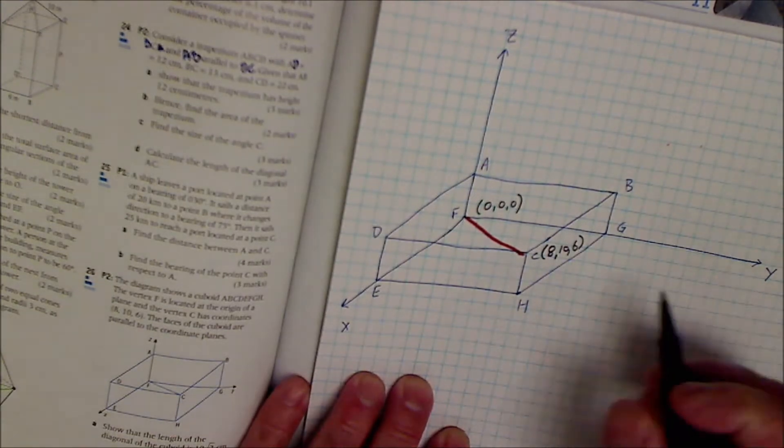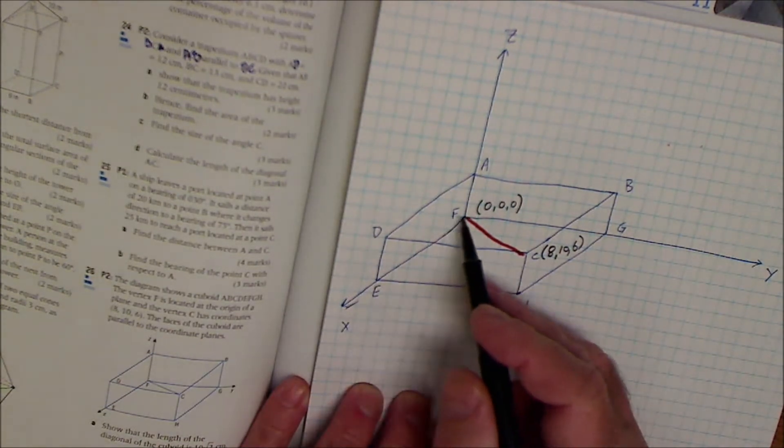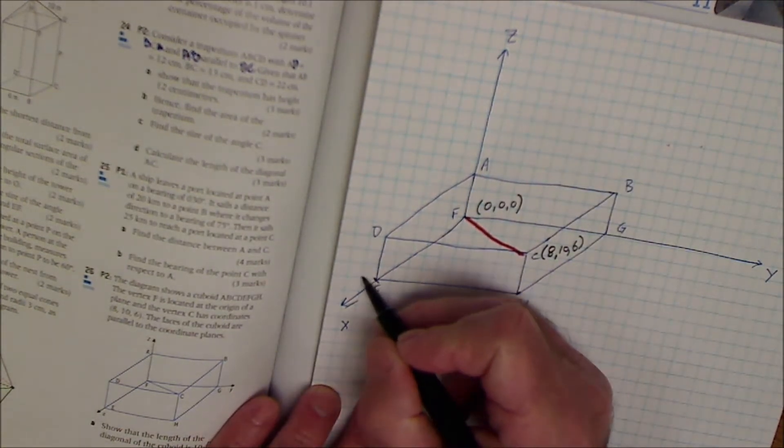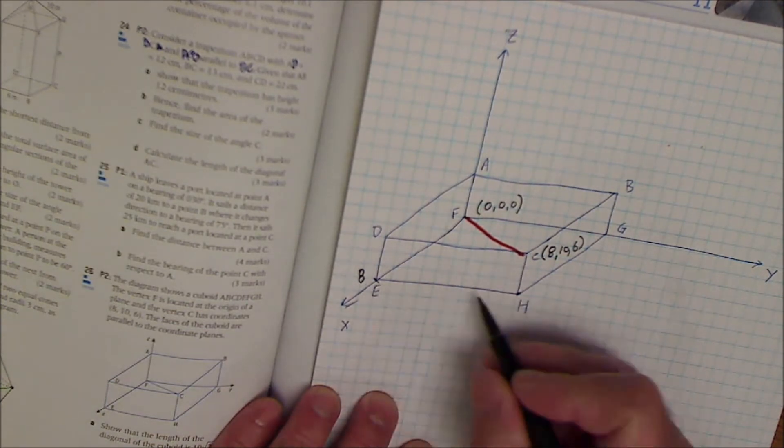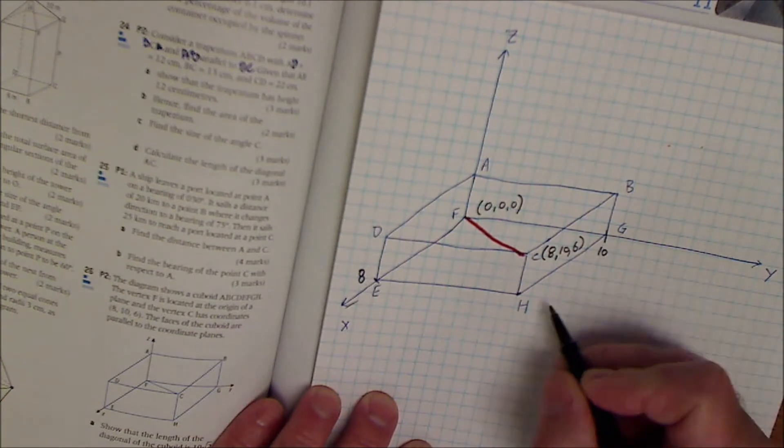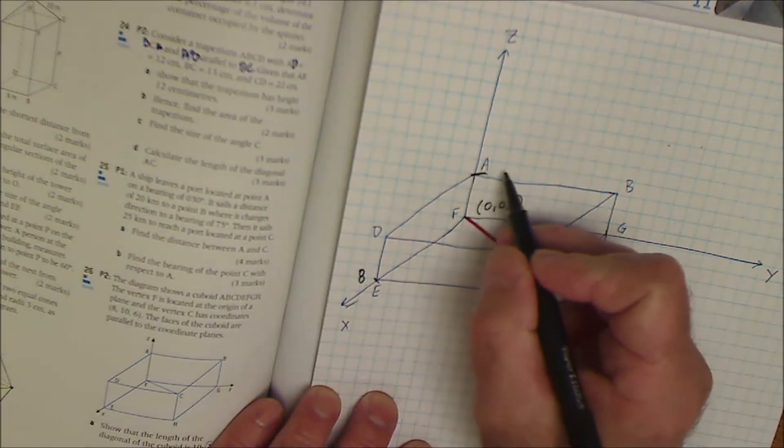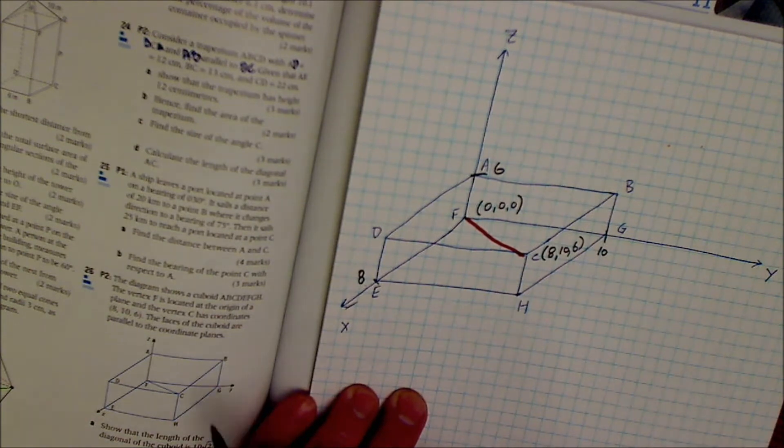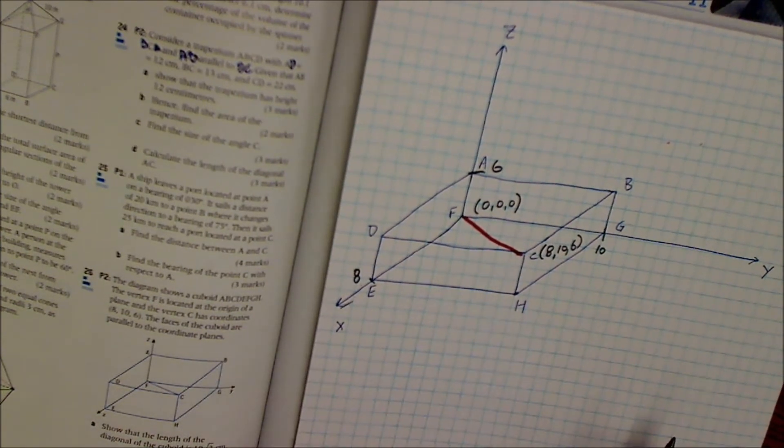That's always x, y, z. This is my x-axis, my y-axis, and going up is z. So I go over 8 units in x, I go over 10 units in y, and I go up 6 units in z. So those are my coordinates there. All of the faces are parallel to the coordinate planes.